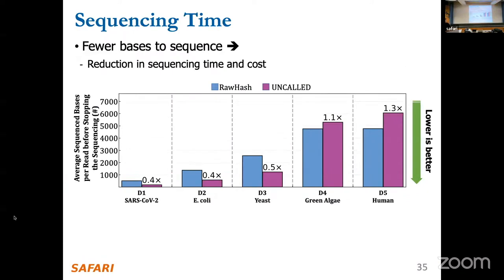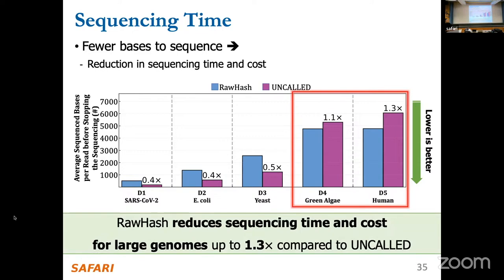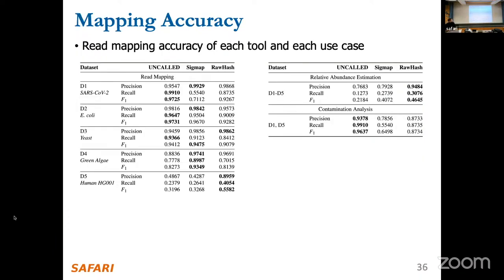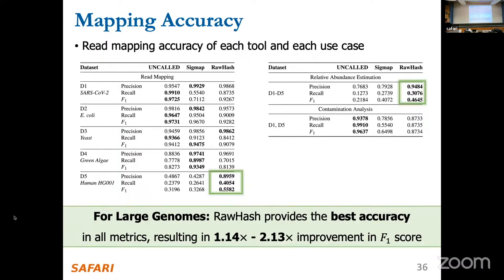The second result shows how many bases need to be sequenced before making a decision. We compare against UnCold, which can perform real-time analysis for large genomes — lower is better here. For large genomes, RawHash needs to sequence fewer bases to make a decision, substantially reducing sequencing time and cost. On accuracy, for large genomes RawHash provides the best accuracy overall in all metrics, resulting in 1.14x and 2.13x improvement in F1 score. For smaller genomes, the other tools are slightly more accurate because of their more sensitive similarity calculation, though that also makes them slower for large genomes.